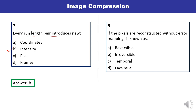Question 8: If the pixels are reconstructed without error mapping, then it is known as — reversible, irreversible, temporal, or fessimal? When the pixels are reconstructed without error, it is known as reversible. That is the correct answer.